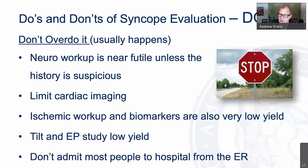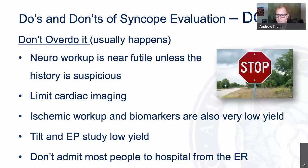Limit cardiac imaging unless there's clinical suspicion — an older patient presents a different question than a young healthy person with a story compatible with vasovagal syncope. Ischemic workup and biomarkers can detect evidence of disease but are unlikely to be related to syncope and have very low yield. They should be discouraged unless clinical suspicion stems from the history. Tilt testing and EP studies are done quite rarely, by electrophysiologists when there's no recourse for an answer and syncope is recurrent.